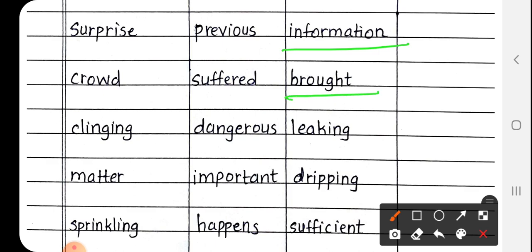Next is brought, B-R-O-U-G-H-T. Brought matlab laya gaya. Next is leaking, L-E-A-K-I-N-G. Leaking matlab tapakna. Next is dripping, D-R-I-P-P-I-N-G. Dripping ka matlab bhi kya hota hai? Tapakna hota hai.